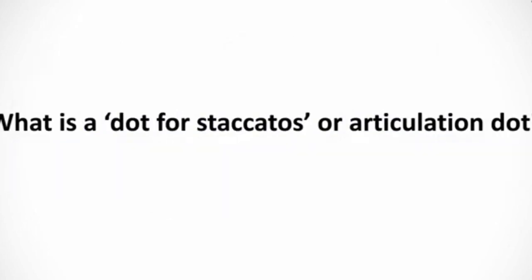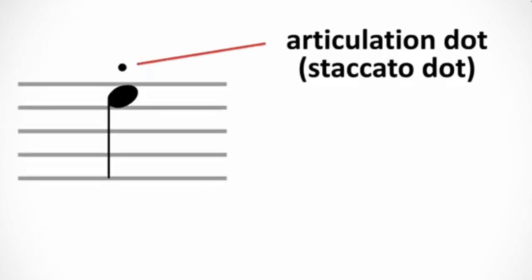What is a dot for staccatos or articulation dot? Quite simply, a dot that is vertically placed compared to the note, so above or below the note head and centered, is an articulation dot. It tells you what kind of touch to use with a note.